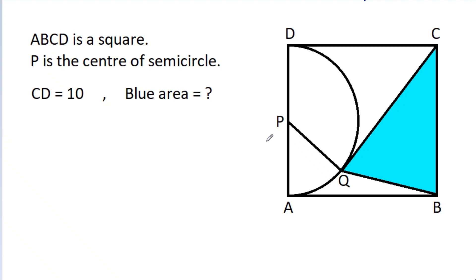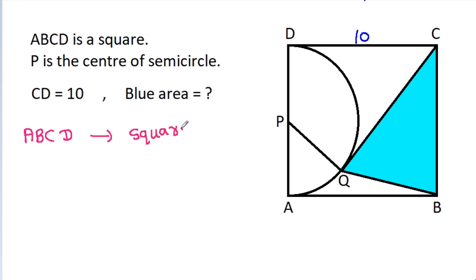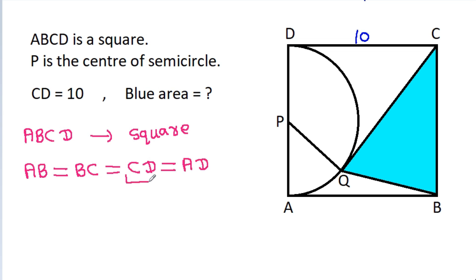In this video, we have been given that ABCD is a square and P is the center of a semicircle, and CD is 10. We have to find the blue area. Since ABCD is a square, AB = BC = CD = AD, and CD is 10.